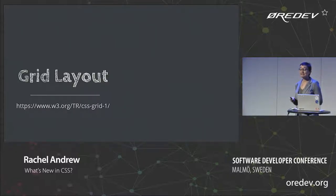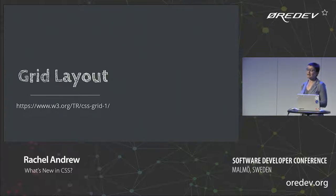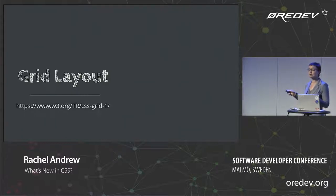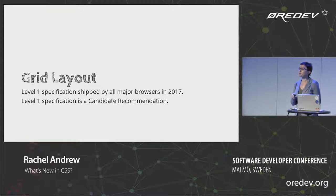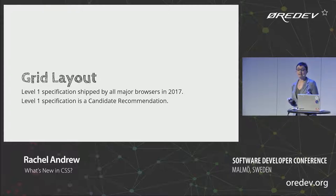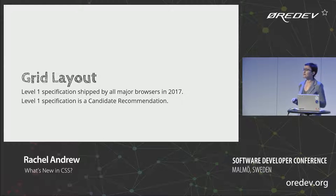I'm going to start with layout because that's my favorite thing — though I won't go too deep since I have a whole talk tomorrow. Grid level one is currently at candidate recommendation status, and it's a great example of a spec at CR at level one that also has a level two in progress. The level one spec was shipped in all major browsers really in 2017, most within a few weeks of each other. It's very solid and really quite bug-free, because grid was developed behind a browser flag for about five years before people could actually use it.